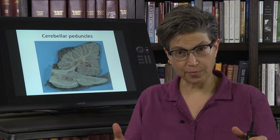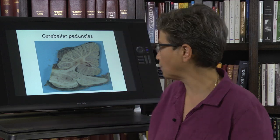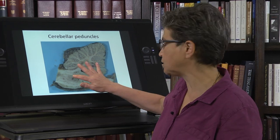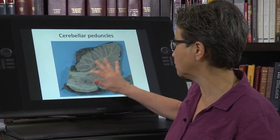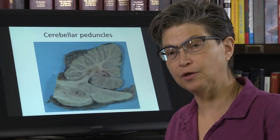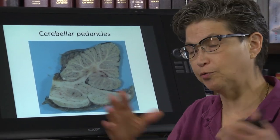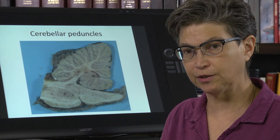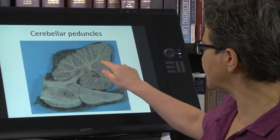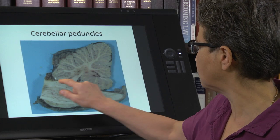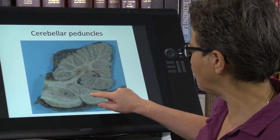Now we're going to look at the cerebellum. The cerebellum is joined to the brainstem through the peduncles, and there are three peduncles: the inferior, the middle, and the superior. We will learn that in more detail later. This is the superior cerebellar peduncle coming out going forward.